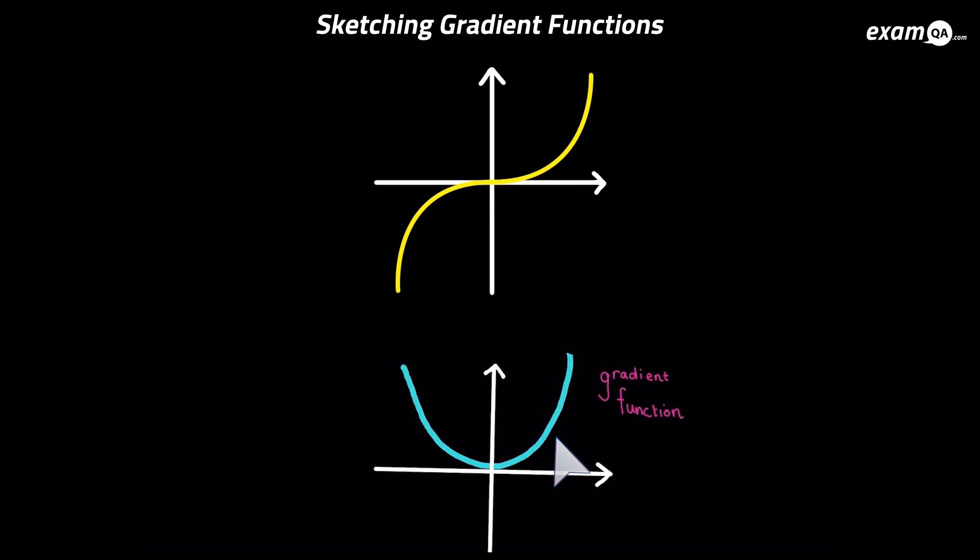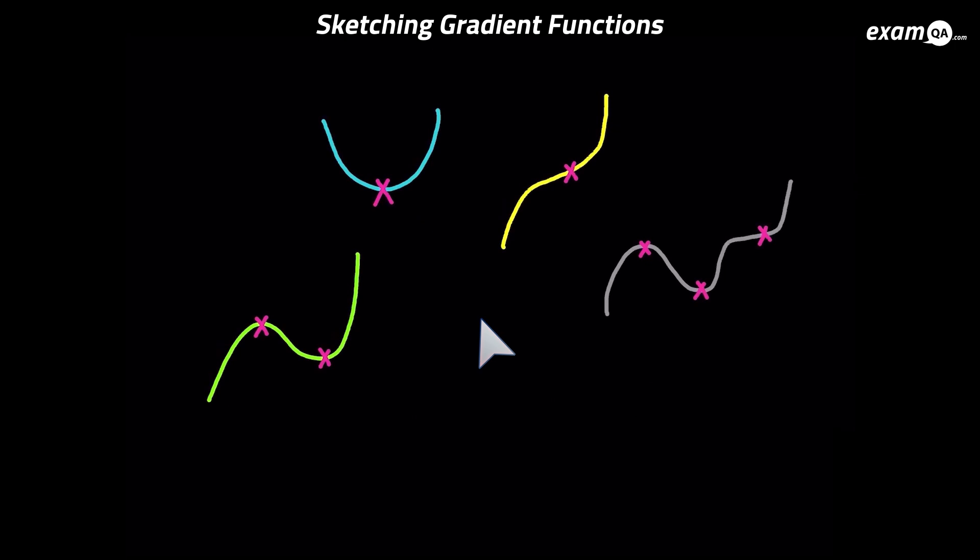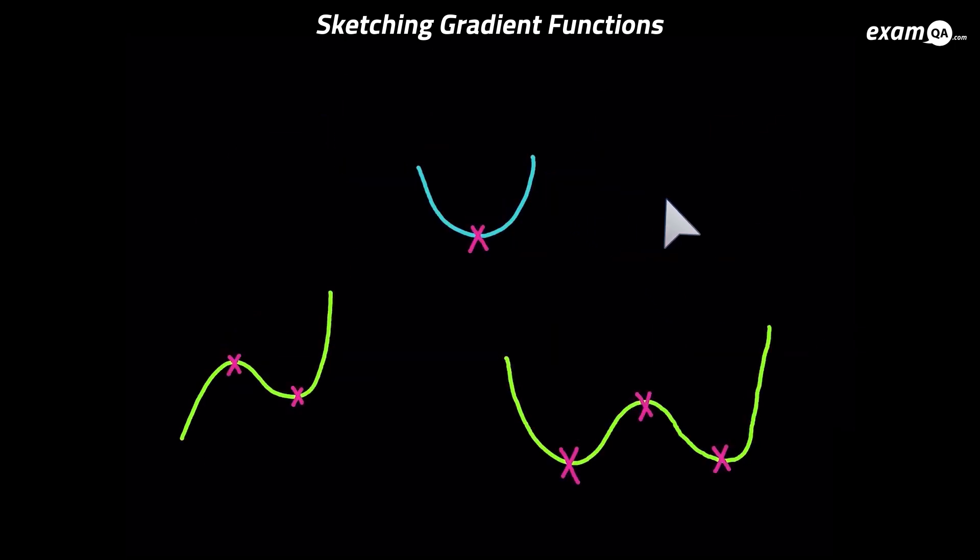Before we do that, I just want you to look at some stationary points. Remember, stationary points have a gradient of 0. And these are some stationary points here. We've got some minimum points, maximum points, and points of inflection. And these points are very easy, maximum and minimum points. They're easy to spot, and of course the gradients are 0. So I shouldn't think you'll have a problem with them.